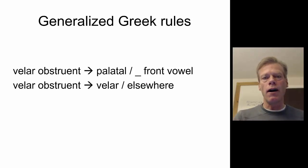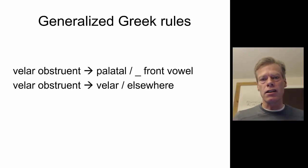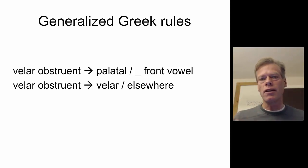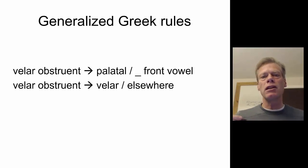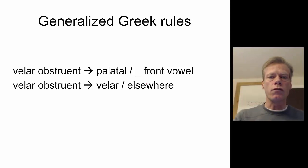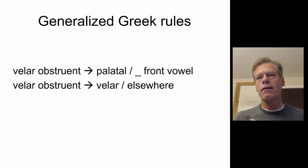Obstruents are all consonants that are not sonorants. Palatal is a place of articulation, so we're saying that velar becomes palatal in this special environment. It is an assimilation of sorts: front vowels draw the tongue further forward, and palatals are further forward than velars.